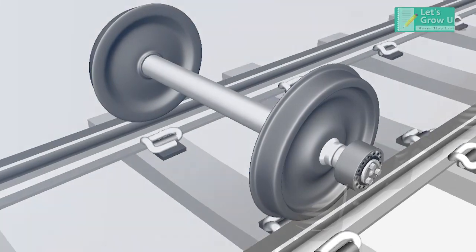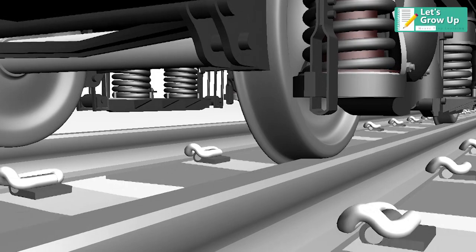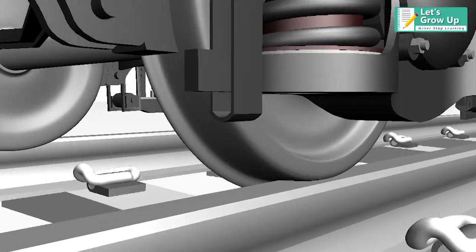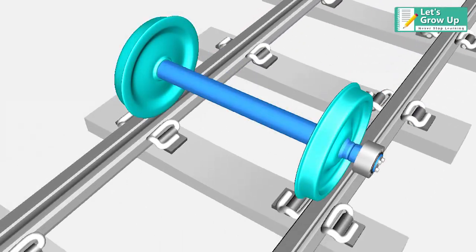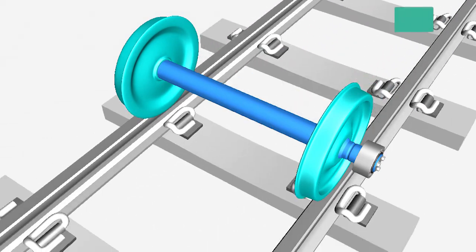The movement of the rolling stock on the track is possible only with the help of wheels. A wheelset is an assembly of two wheels fixed to the axle by interference, and they rotate along with the axle.